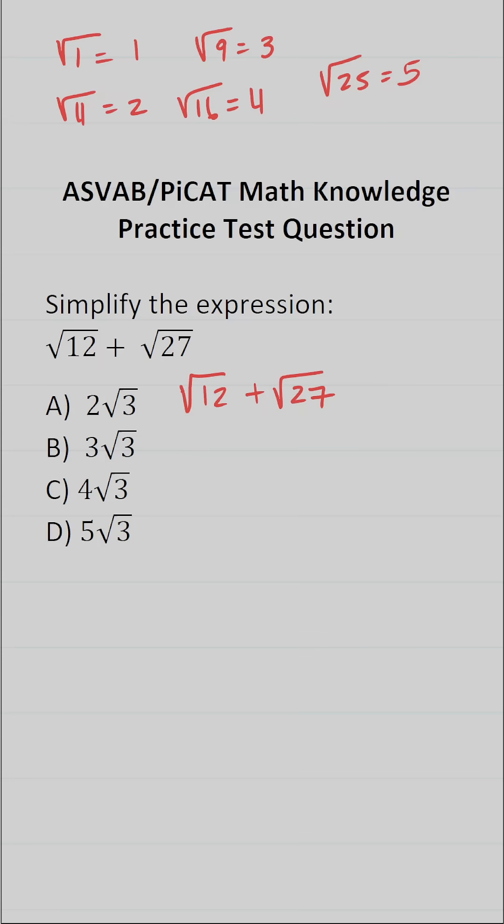So to get started I'm going to break these apart because I know that 12 is the same thing as 4 times 3. Likewise I know that 27 is the same thing as 9 times 3.